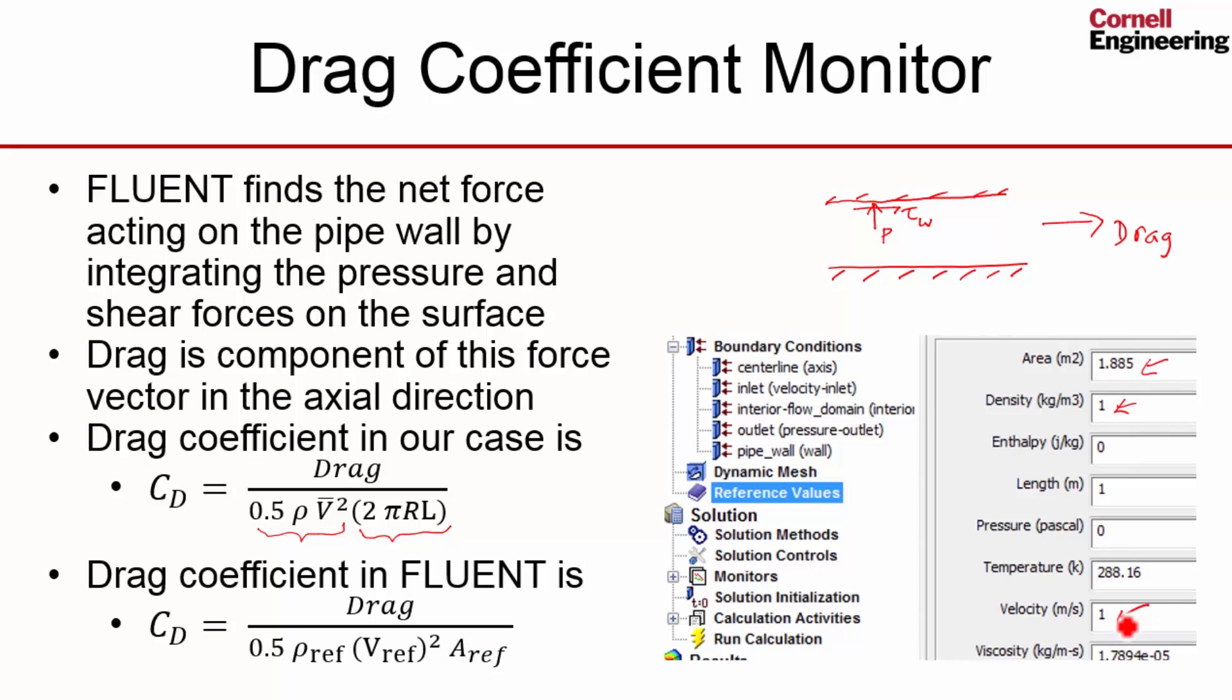So once we enter those three entities, our drag coefficient will be calculated correctly. The reference values won't affect the drag. It will affect only the drag coefficient. The reference values won't affect your solution. It affects only post-processing and post-processing of non-dimensional quantities.